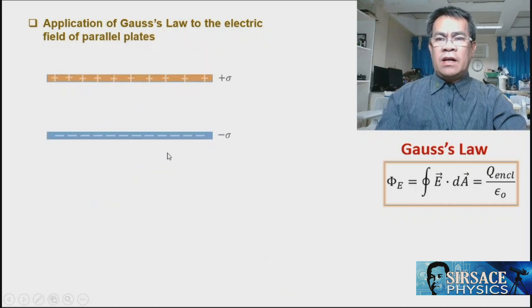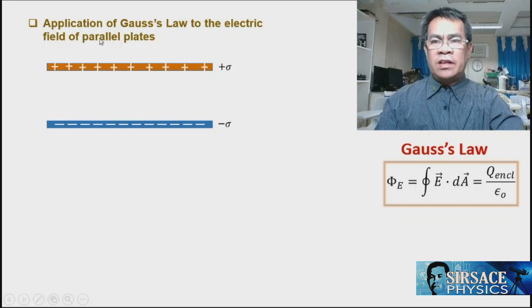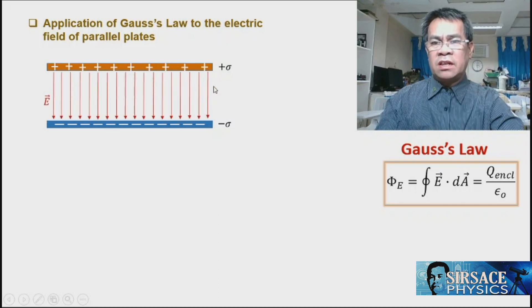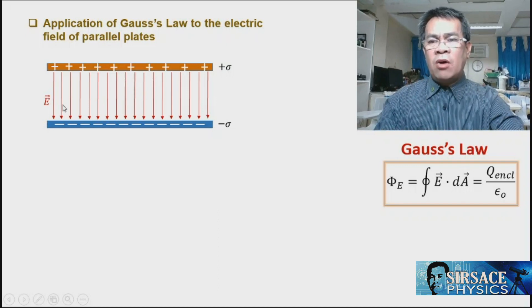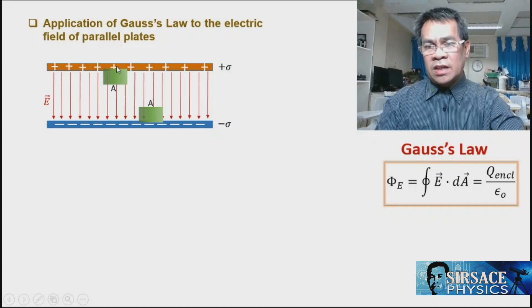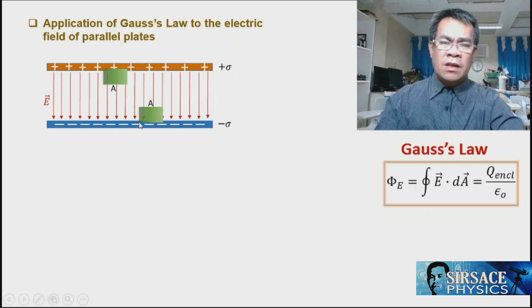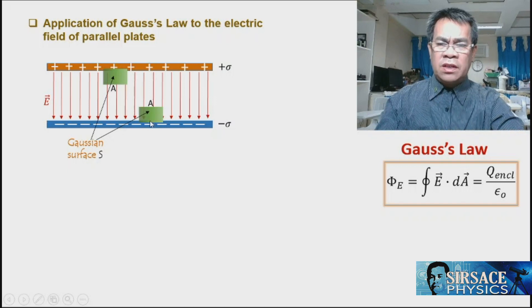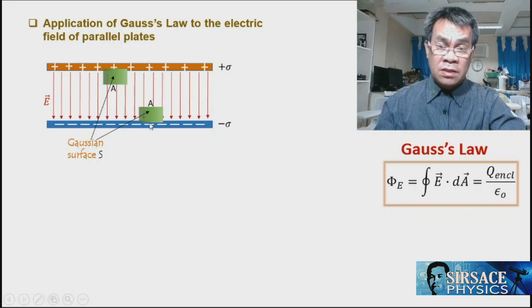The last application is for parallel plates. The question is: how much is the electric field within the parallel plates? We know that the electric field between parallel plates is constant, so distance doesn't matter. To answer this, we consider a Gaussian surface of area A on the positive plate side and another Gaussian surface on the negative side. There is no flux on the side curved portion of the cylinder.